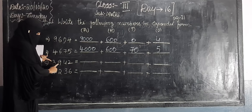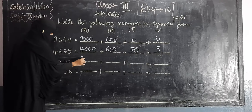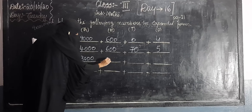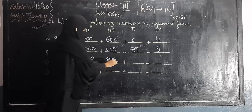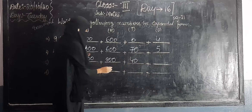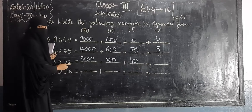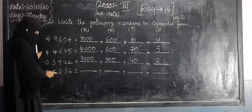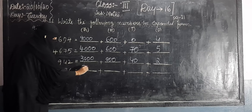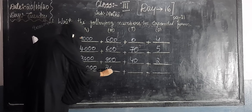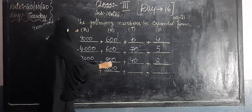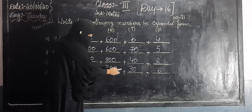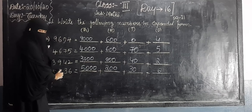Next: 3942. So, 3 into 1000 that is 3000; 9 into 100, that is 900; 4 into 10, that is 40; and the place value of 2 is ones, so we write 2. Next: 5236. 5 into 1000, that is 5000; 2 into 100, that is 200; 3 into 10, that is 30; and 6 ones. So 5236.